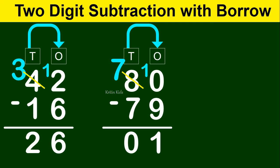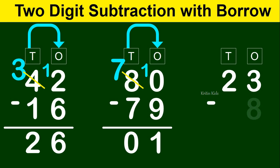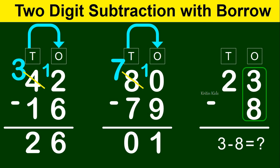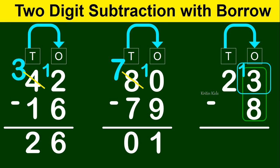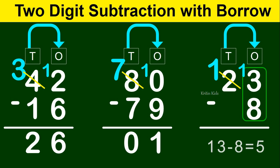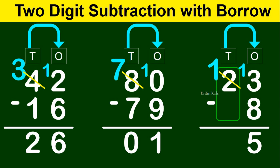Let's take one more example: 23 minus 8. On the ones position we have 3 and 8. We cannot subtract 8 from 3, so we will have to borrow. Can we take a borrow here? Yes. So let's take 1 from 2 — this number becomes 13, and 2 becomes 1. 13 minus 8 gives us 5. At the tens position we have 1, and 1 minus 0 gives us 1. So 23 minus 8 gives us 15.